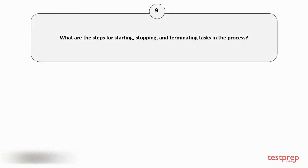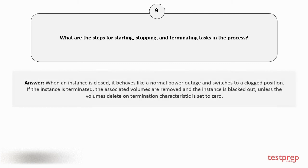Question number 9: What are the steps for starting, stopping, and terminating tasks in the process? When an instance is closed, it behaves like a normal power outage and switches to a stopped position. If the instance is terminated, the associated volumes are removed and the instance is shut down, unless the volumes' delete-on-termination characteristic is set to zero.